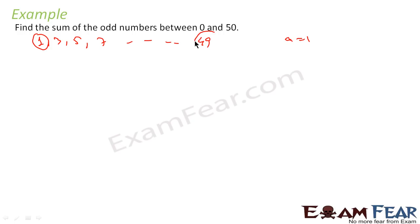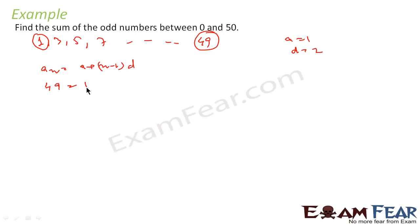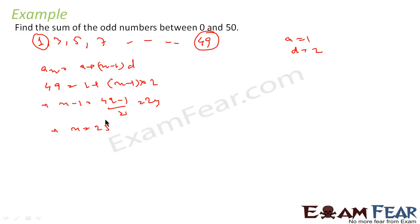We need to find the value of N. We know D is 2, since 3 minus 1 is 2 and 5 minus 3 is 2. Using the formula A_n = A + (N−1)D, and setting A_n = 49, we get 49 = 1 + (N−1)×2. So N−1 = 48/2 = 24, therefore N = 25. We now have the value of N.